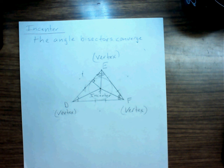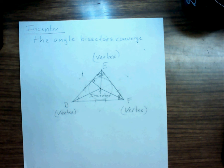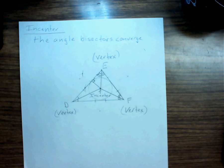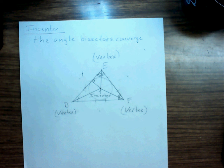The incenter is equidistant from the sides of the triangle, while the circumcenter is equidistant from the vertices of the triangle. We did two examples of this. The application for the circumcenter was the food stand equidistant from carnival attractions — bumper cars, a ferris wheel, and a carousel. The second example for the incenter was a swing set in a triangular playground with a fence — the incenter is the ideal location equidistant from all three sides.